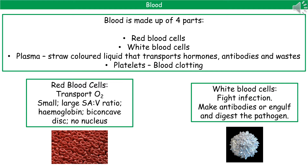The red blood cells are involved in transporting oxygen around our body. They have a few adaptations: they're small, they've got a large surface area to volume ratio, they contain haemoglobin, are a biconcave disc shape, and have no nucleus to pack more haemoglobin inside. The white blood cells are the ones that fight infection — they can make antibodies, and they can engulf and digest the pathogen.